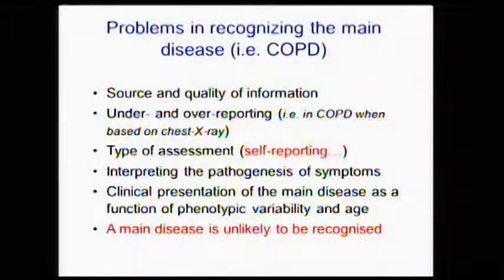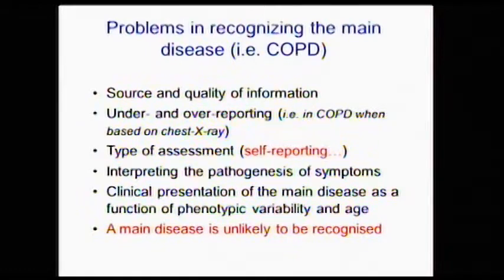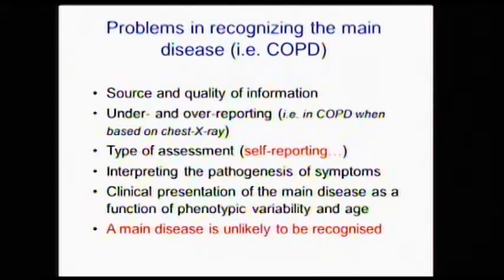When we refer to the principal diagnosis, we may have problems in defining the main disease. Most notably, the problem in recognizing a main diagnosis in chronic patients relates to the source and quality of information — the diagnosis may be under- or over-reported. For instance, in COPD, the diagnosis may be defined as primary without spirometric confirmation, based only on clinical grounds or chest X-ray. In some cases, symptoms can be shared among different pathologies, making it very unlikely to firmly recognize a primary diagnosis.